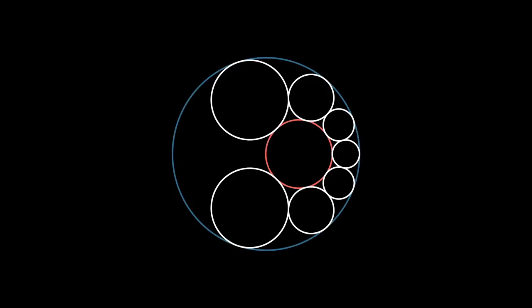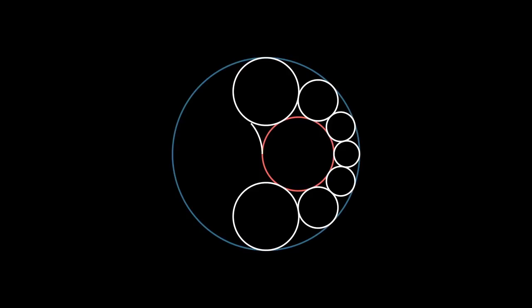In most cases this chain won't join up, there'll be a gap left over which can't be filled by a single circle. But if we choose the size of the inner circle to be just right, this chain of circles will form a tight ring.